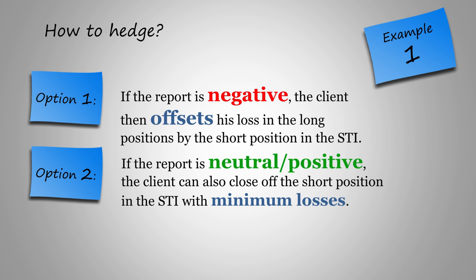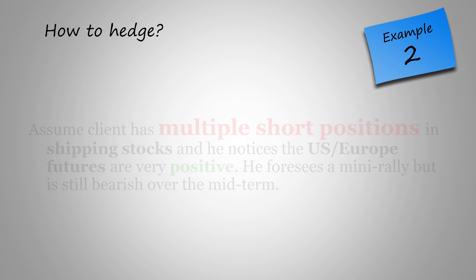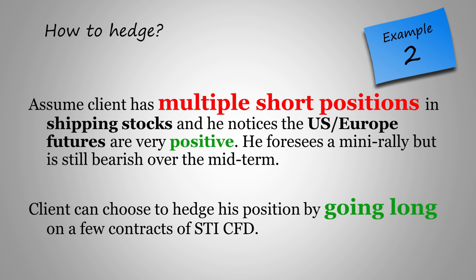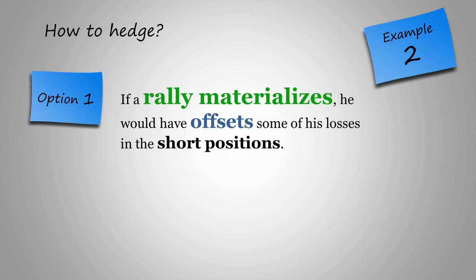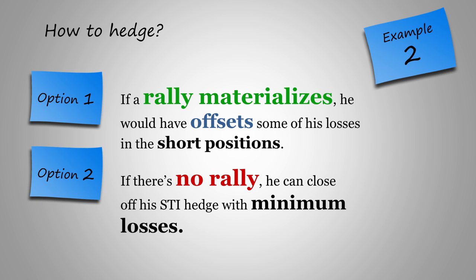The other option is if the report is neutral or positive, the client can also close off the short position in the STI with minimum losses. In another example, assume a client has multiple short positions in shipping stocks and he notices the US or Euro futures are very positive. He foresees a mini rally but is still bearish over the midterm. The client can then choose to hedge his position by going long on a few contracts of STI CFD. If a rally materializes, he will have offset some of his losses in the short position. Alternatively, if there is no rally, he can close off his STI hedge with minimum losses.